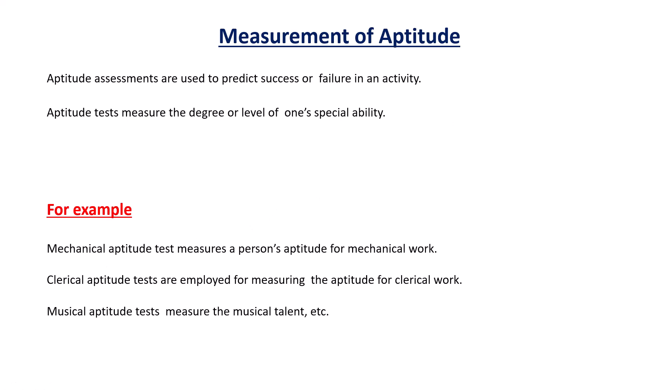The musical aptitude test measures musical talent — things related to music, singing, or understanding types of songs. Clerical aptitude is related to cognitive abilities such as thinking, judgment, and reasoning. Mechanical aptitude test measures how a person understands reality — the relationship between machines and situations — and all such things come under mechanical aptitude test.